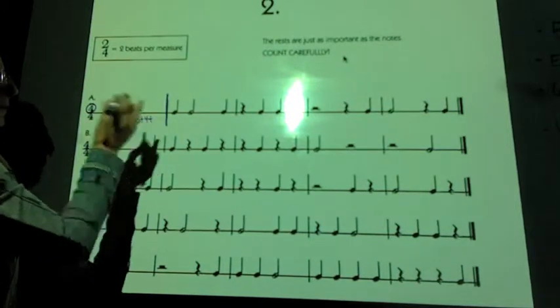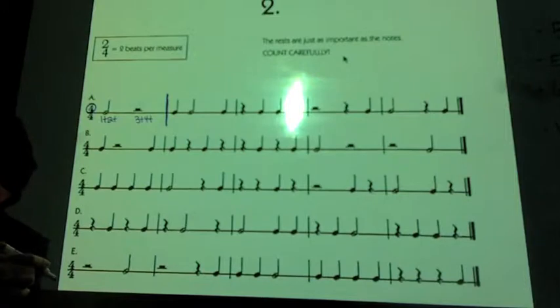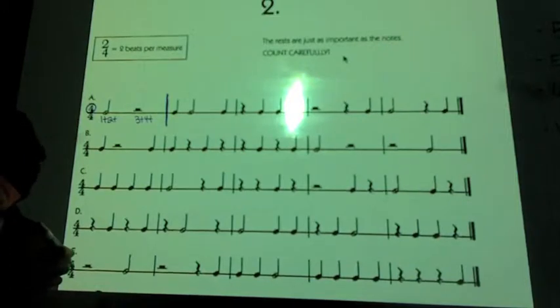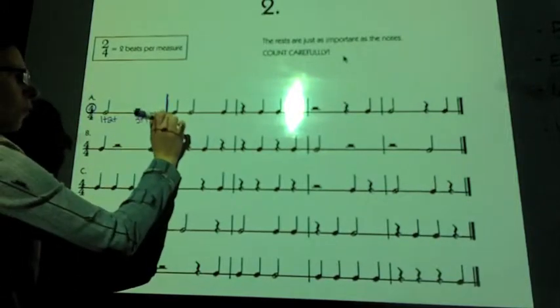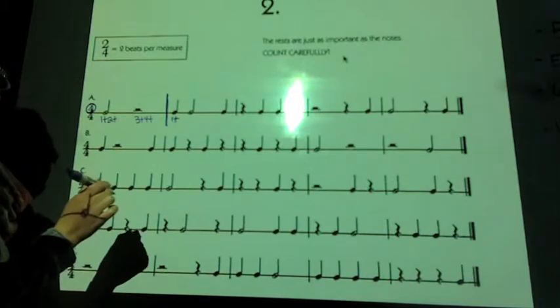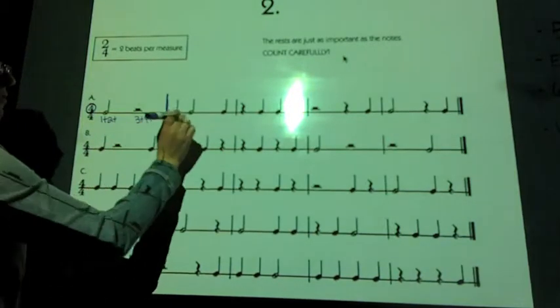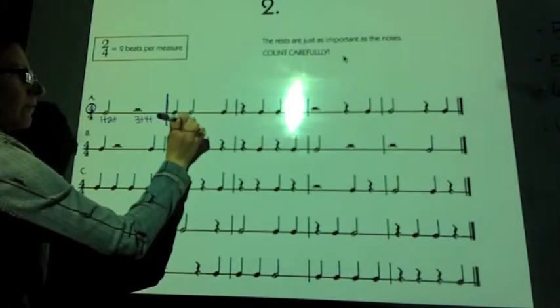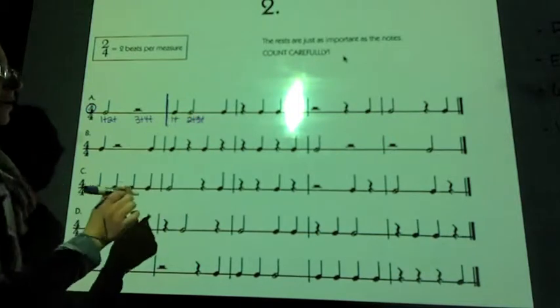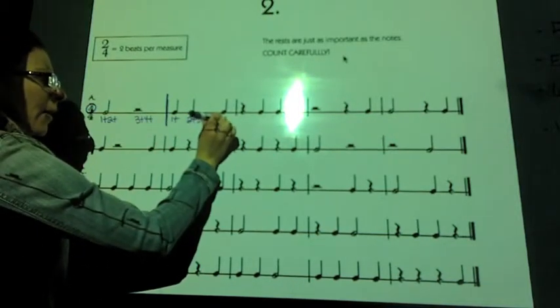Here we have the bar line. That tells us a new measure is starting. Quarter note, one beat, one number. Half note, two beats, so we use two numbers. And another quarter note, one beat, one number.